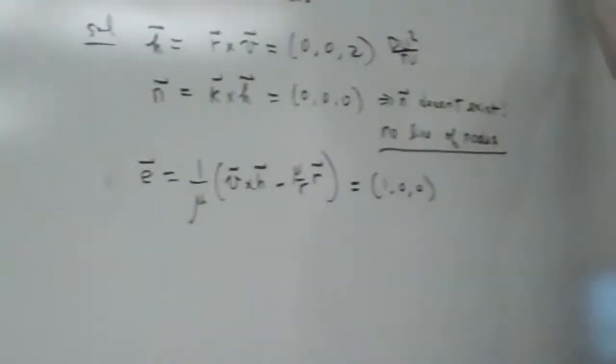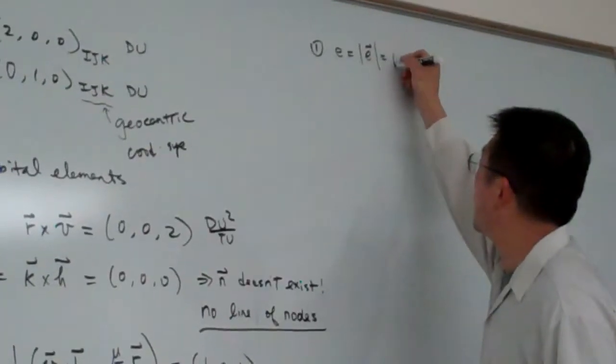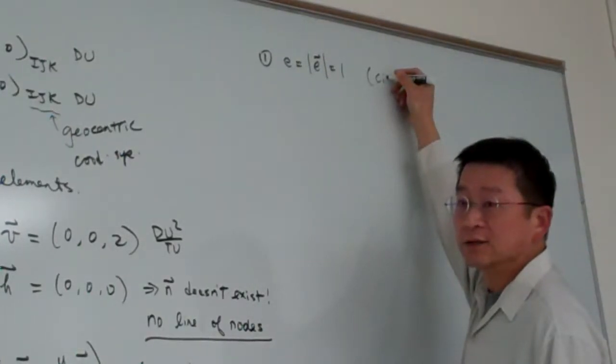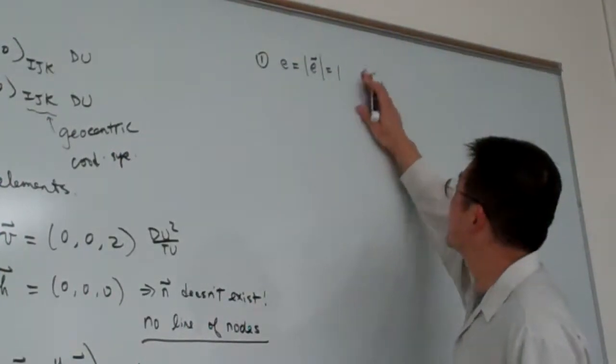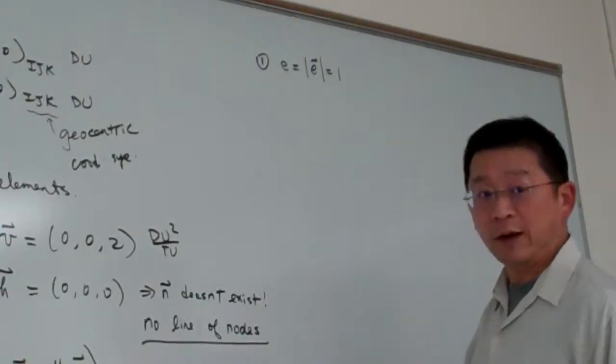And so therefore, our first element, e, the eccentricity, equal to 1. So basically, this is equal to 1 is parabolic, equal to 1 is parabolic, right?